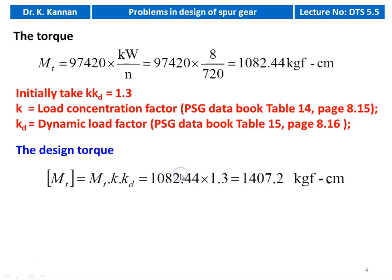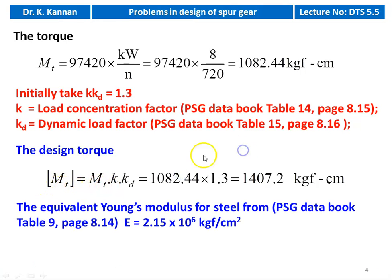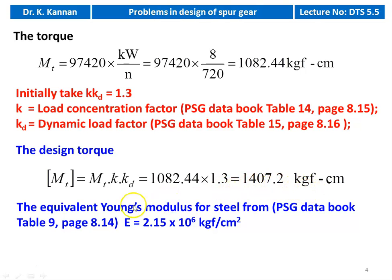The design torque [MT] equals MT × KKd. With KKd assumed as 1.3: 1082.44 × 1.3 equals 1407.2 kgf·cm.